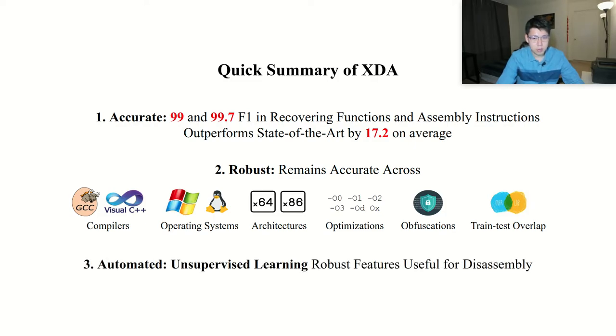Finally, it is automated. We leverage novel, unsupervised self-training to learn robust features useful for disassembly without any manual encoding features or creating heuristics. This implies that we can cheaply collect a huge number of training samples in the wild.